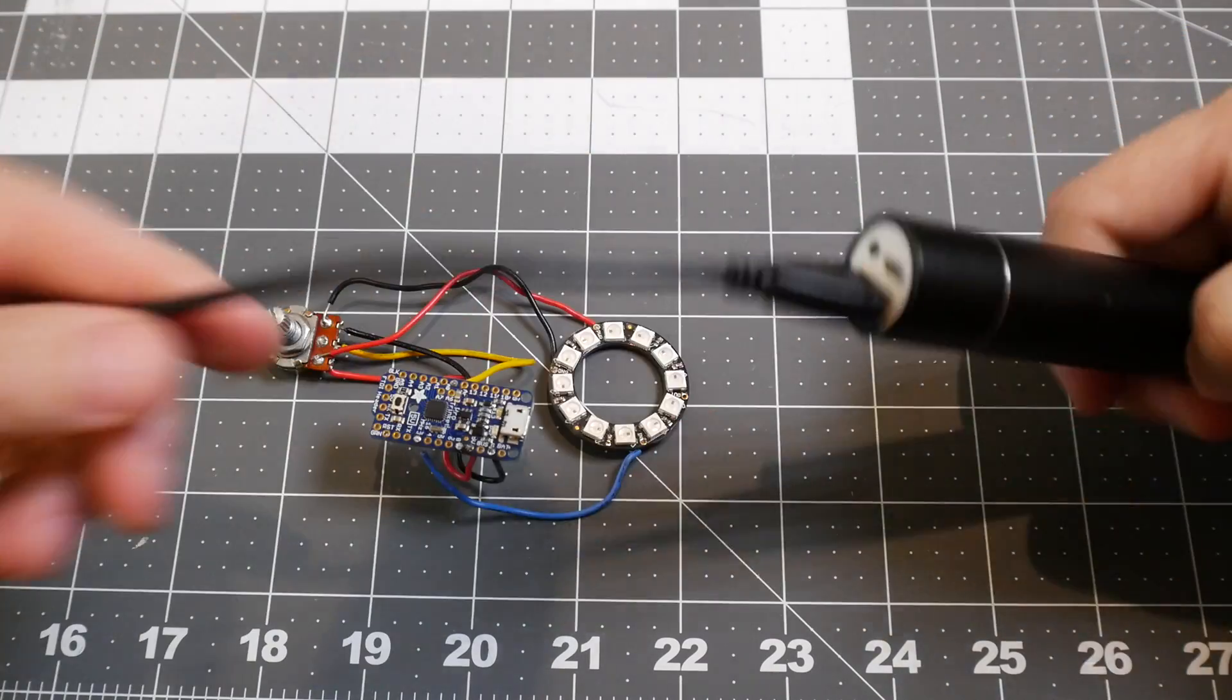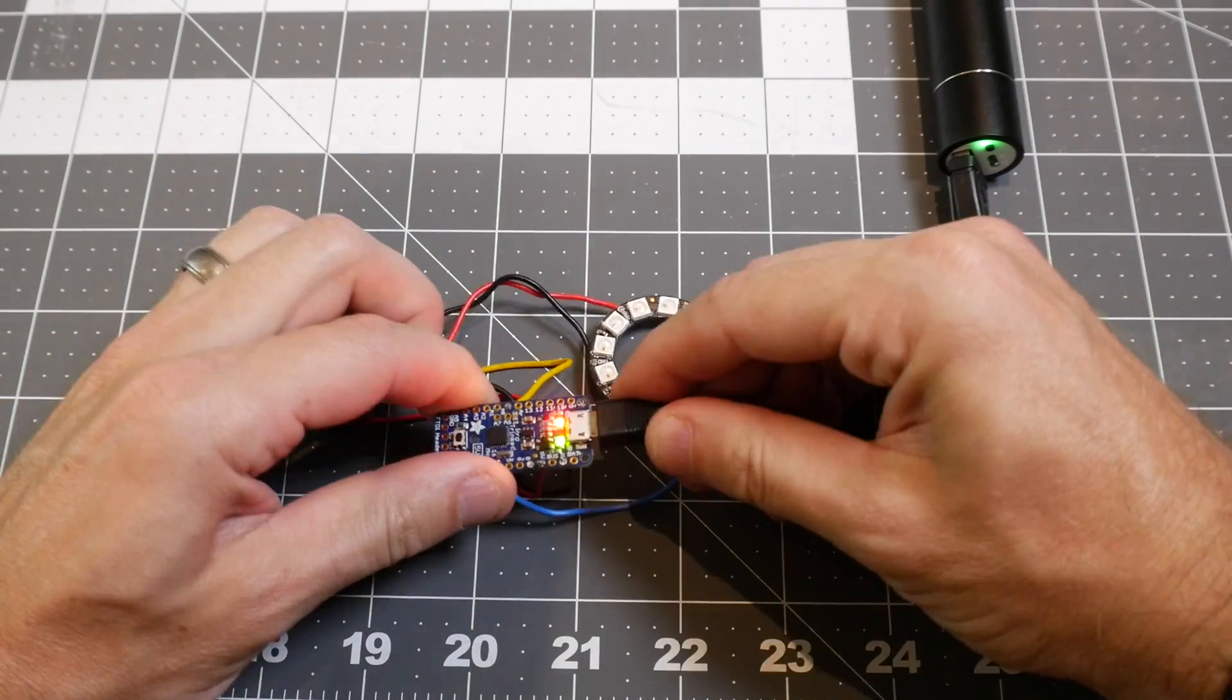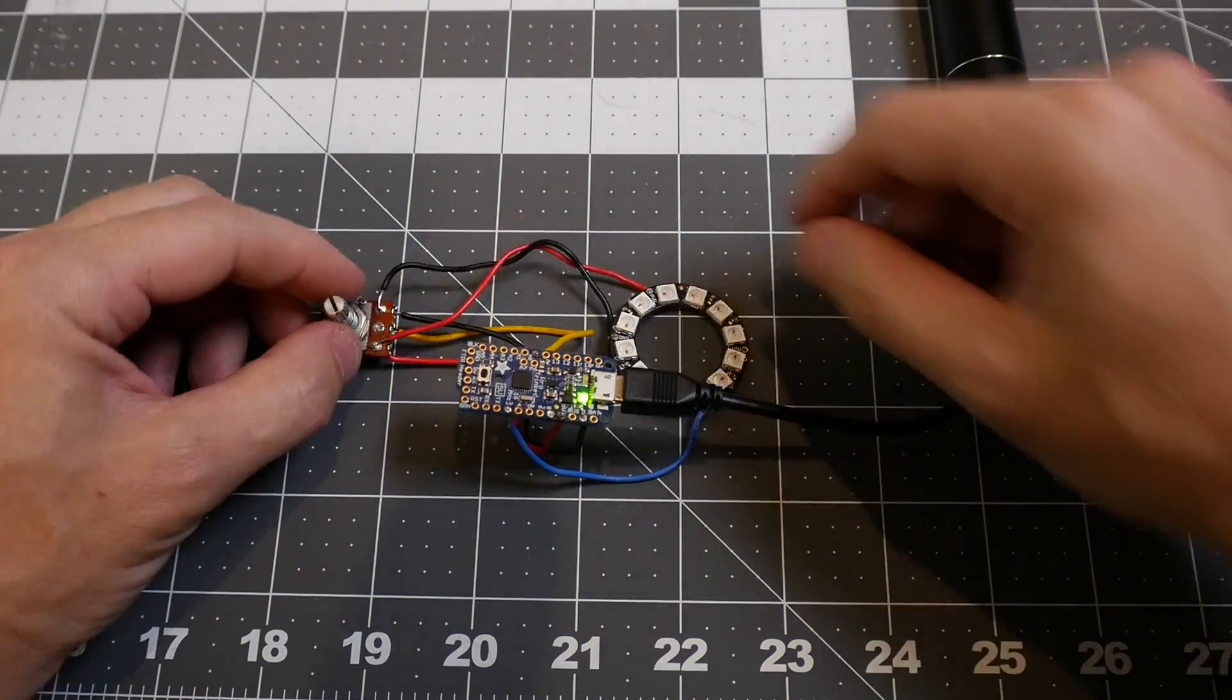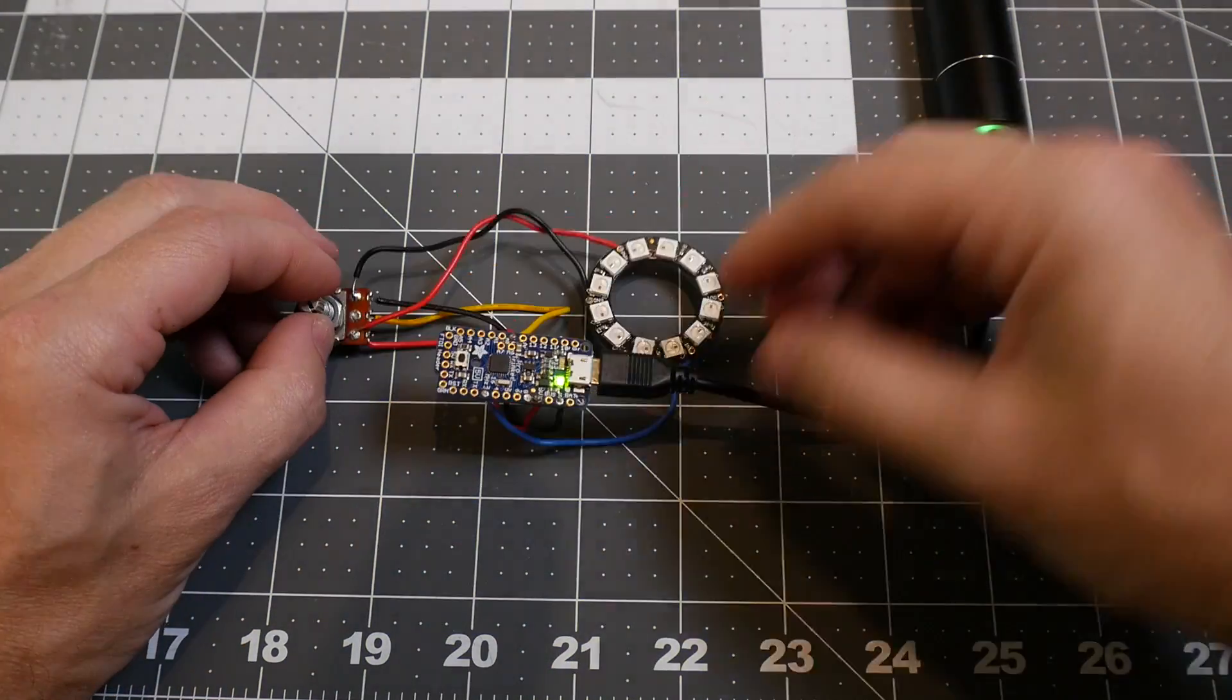I uploaded that code to the trinket, and then it was time to try it out. This battery pack puts out 5 volts, which is exactly what the trinket needs. Plug it in, and it was working. You can use the knob to change the brightness.